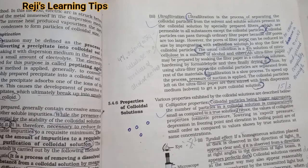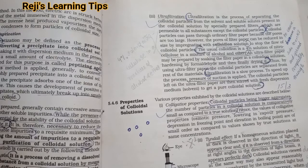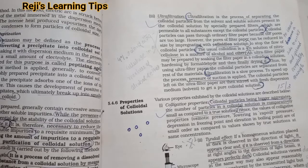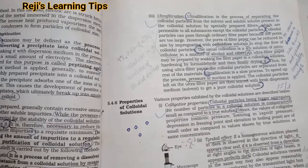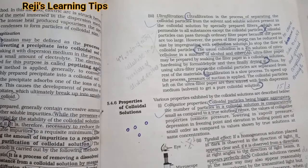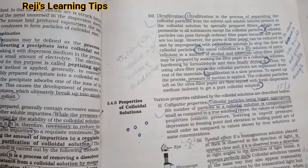The pore size of the filter paper is reduced by using colloidal solution — 4% nitrocellulose in a mixture of alcohol and ether — to soak and dry the filter paper to make the ultrafilter paper. Then we filter through it, and pressure or suction is applied to speed up the process.